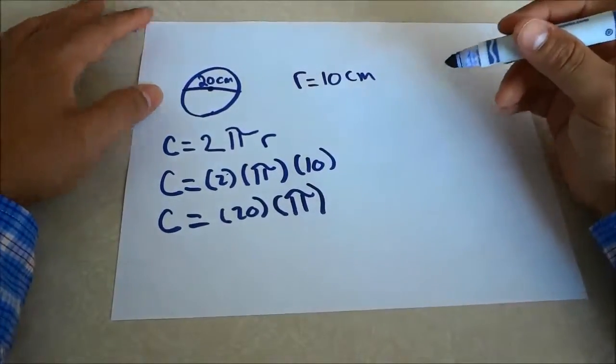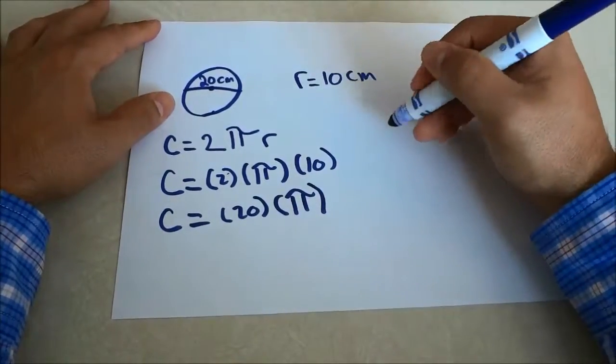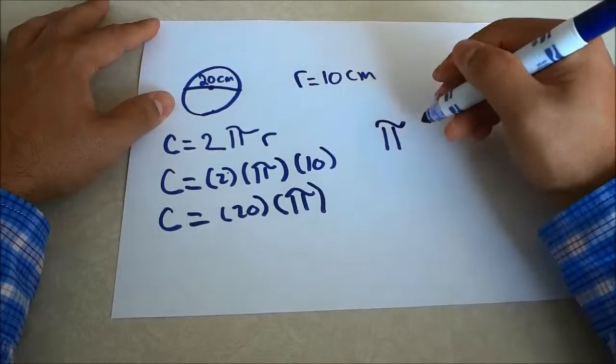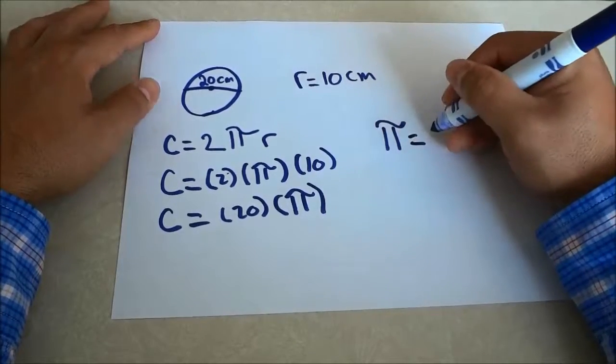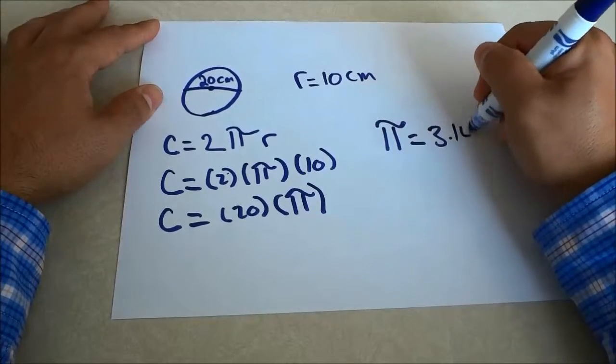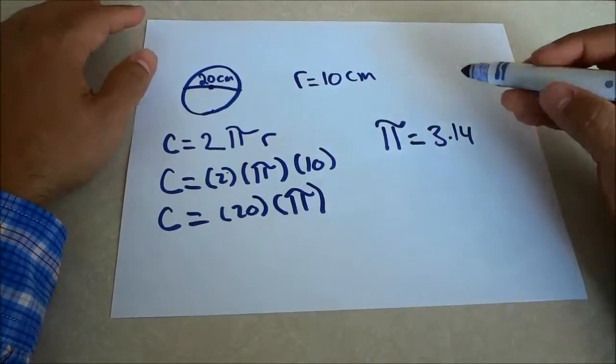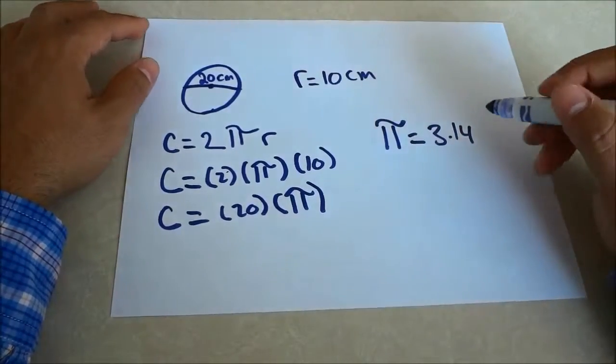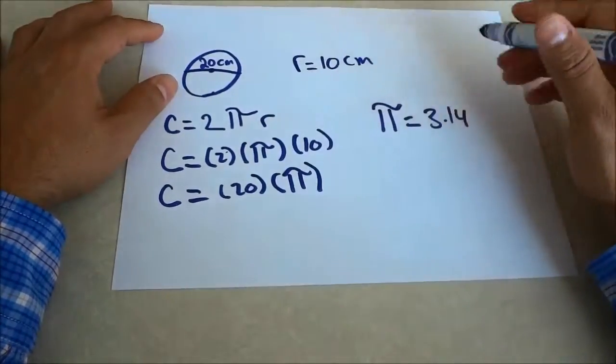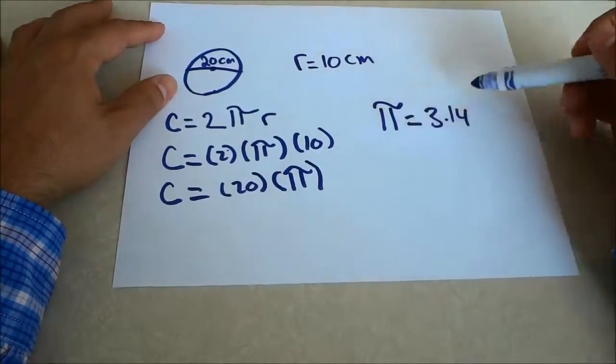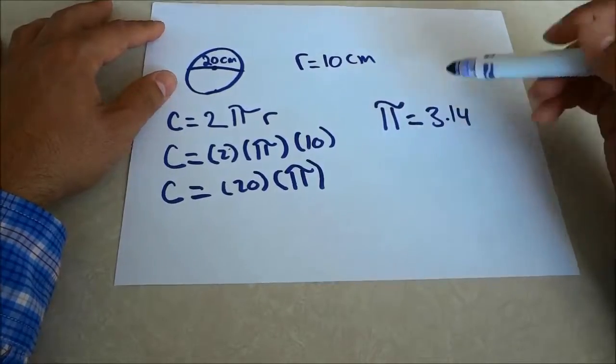Now for π, I'm just going to do it over on the side here. We know that π equals roughly 3.14. This is a rough figure, but it will get you really close to the exact answer if you don't want to use the π symbol on a calculator and you just want to do this math the old school way.